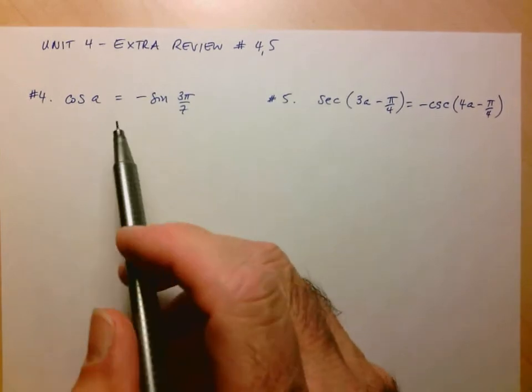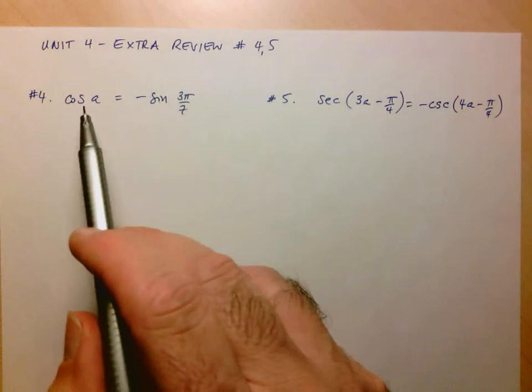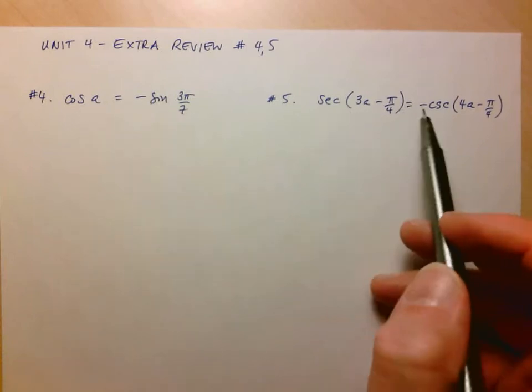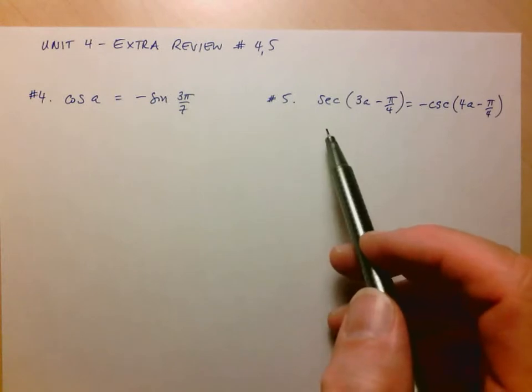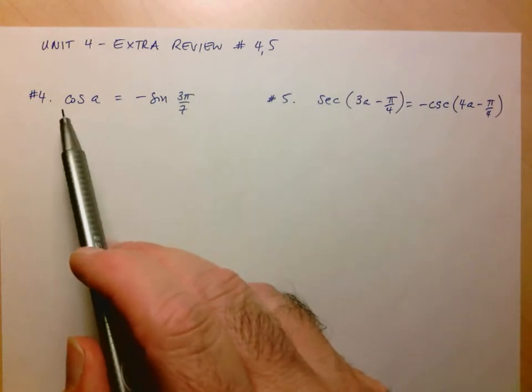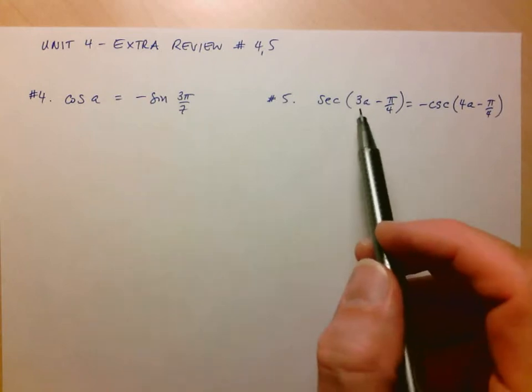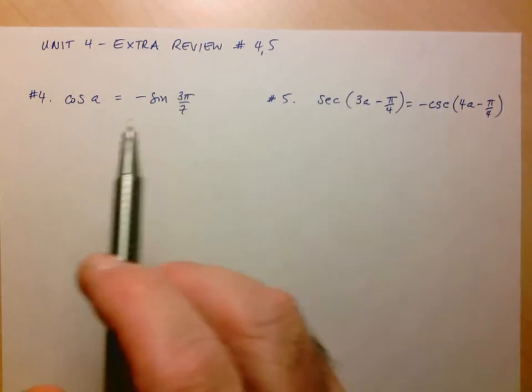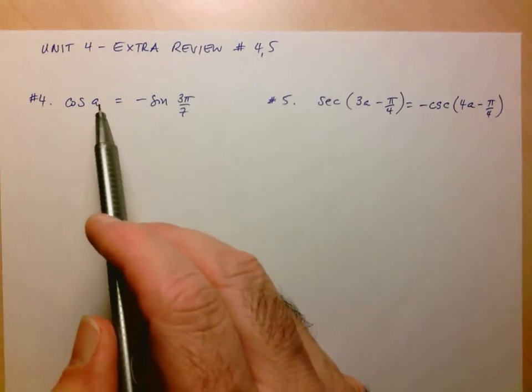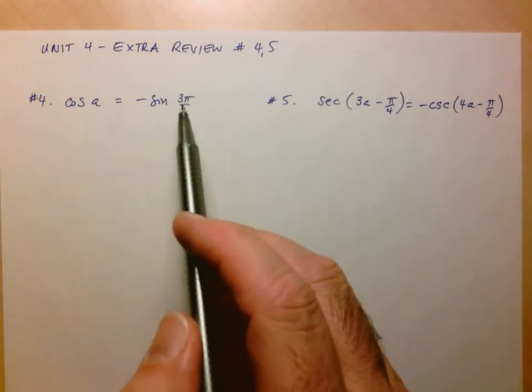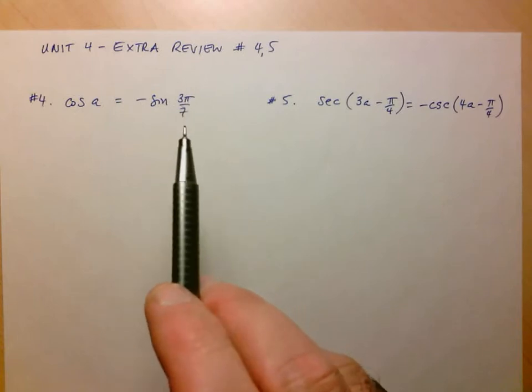First thing we notice in both of these is you have two different trig ratios that are set to be equal. And in this case, the equality is between the positive version of one and the negative version of the other, similarly here. So let's take a look at this first one. We see that cosine of some angle is the negative sine of this angle, 3π over 7.